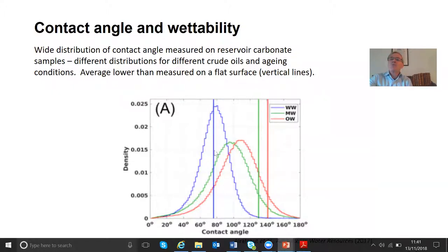Okay. The blue curve is something that's a bit water wet. Actually it's a piece of rock where we put in the crude oil but we didn't wait. And so it's weakly water wet. The contact angles are just slightly less than 90 degrees. The vertical line is where we take a flat calcite surface and we measure the contact angle and we get something that's sort of in the middle of the distribution.